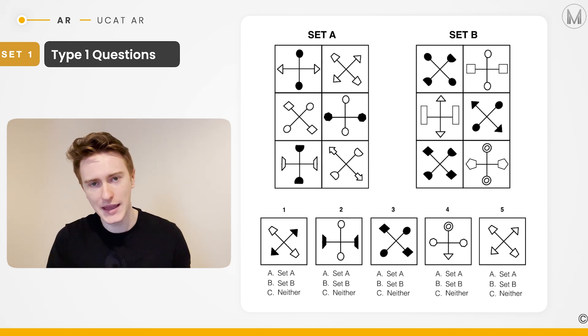Contrast that to set B. Set B has a cross shape when all of the shapes attached are black and it has a plus shape when all of the shapes attached are white and there's no mixed shapes. In other words, there's no mixture of black and white in the same example. This is quite a convoluted rule because it's got a kind of sub rule in each set, but that is the rule nonetheless.